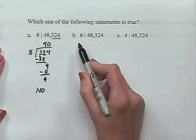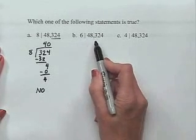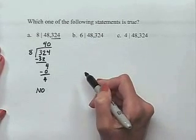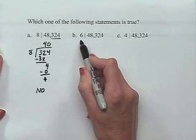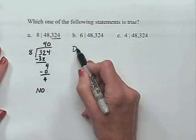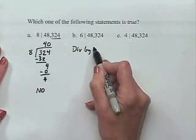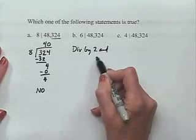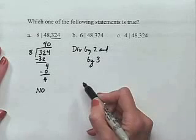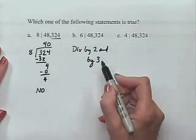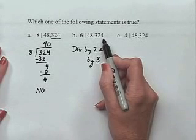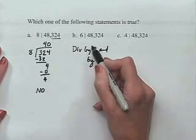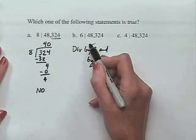Let's try the second one, Part B: 6 divides 48,324. What we're going to use to test for divisibility is if it's divisible by 6, then it should also be divisible by 2 and by 3. To determine if a number is divisible by 2, we simply look at the last digit. If that last digit is even, then it is divisible by 2. Because we have an even number, we know this part does work — it is divisible by 2.